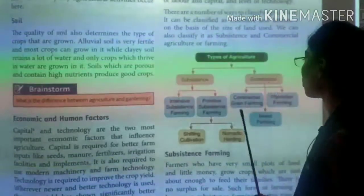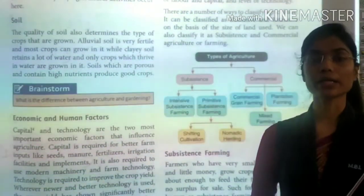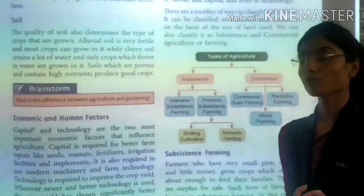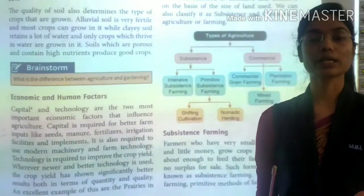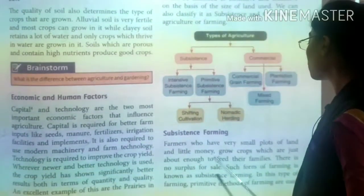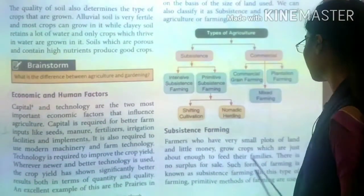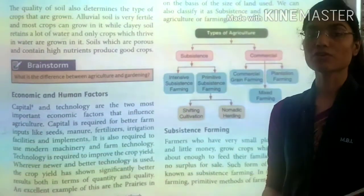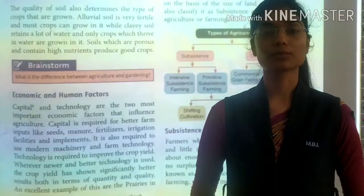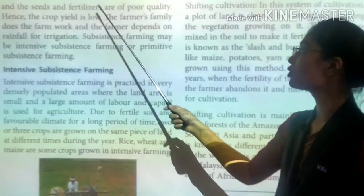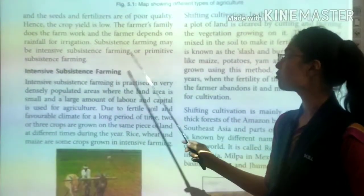Let's start with subsistence farming. In subsistence farming, farmers cultivate a small plot of land for their own needs using primitive methods and no new technologies. Poor quality seeds and fertilizers are used, resulting in poor quality crops. Subsistence farming is divided into two parts: intensive and primitive subsistence farming.